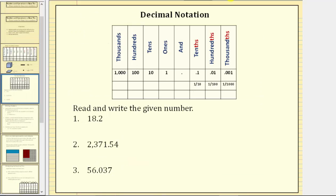Going back to the previous slide, for number one, we have a one in the tens place value, an eight in the ones place value, a decimal point, and a two in the tenths place value. We read and write this number as "eighteen and two tenths."